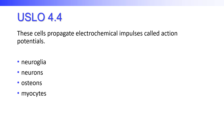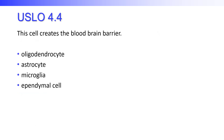Now moving into USLO 4.4 on nervous tissue. These cells propagate electrochemical impulses called action potentials. Is it neuroglia, neurons, osteons, or myocytes? Hopefully you chose a word with 'neuro' in it — the correct answer is neurons. This cell creates the blood-brain barrier — is it the oligodendrocyte, the astrocyte, the microglia, or the ependymal cell?